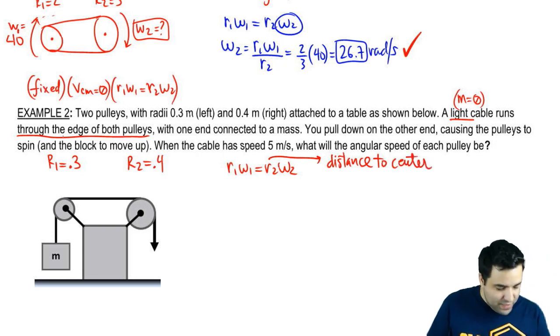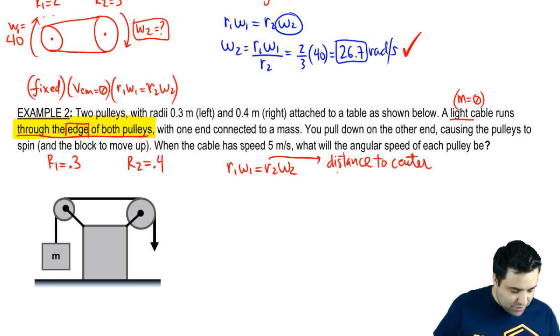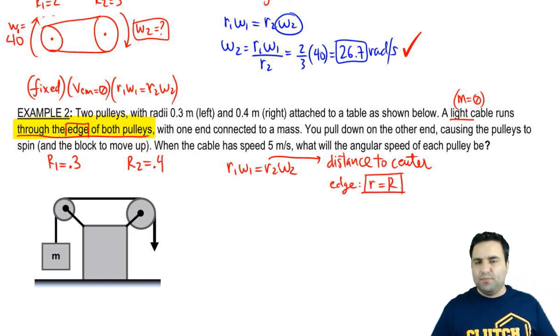Now, when it says that the cable runs through the edge of both pulleys, the word edge here tells us that the distance to the center in this case happens to be big R, the radius, which that's what's going to be most of the time.